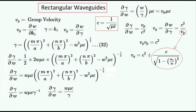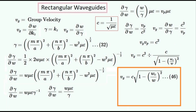So we can calculate what the group velocity is in terms of the phase velocity that we calculated earlier. Now we get this very important formula for the group velocity expressed in terms of the radial frequencies. We can also get this formula for the group velocity in terms of the frequencies — the frequency of the wave in the waveguide and the cutoff frequency of the waveguide.